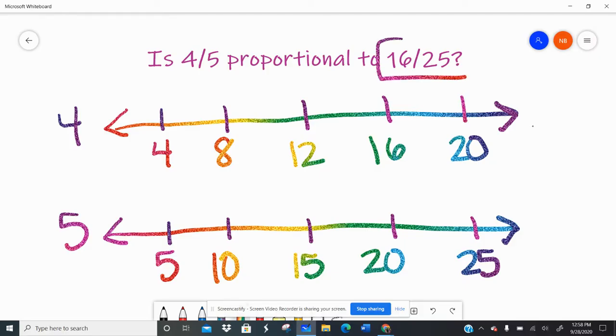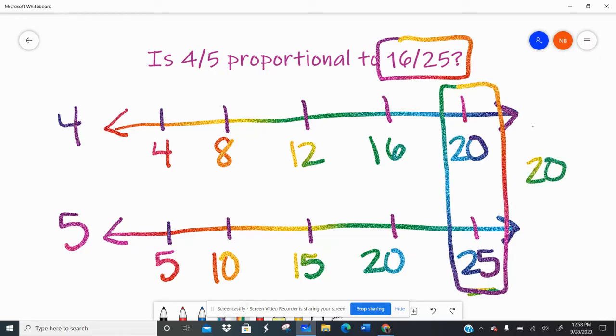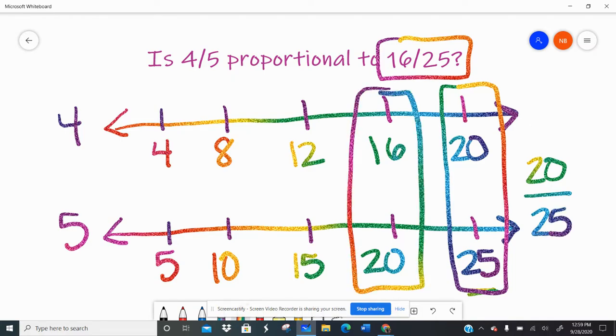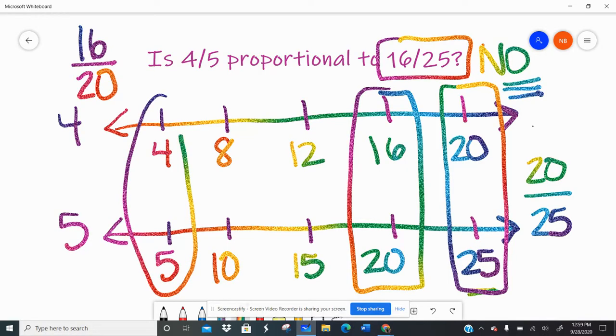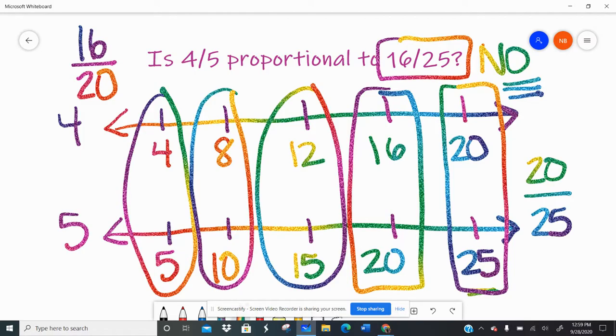So it says is 16/25? Well, if I go to 25, in order to be proportional, I would have to have 20/25. If I went to the 16, in order to be proportional, I would have to have 16/20. So the answer to this question is no, they are not proportional because the 16 and the 25 do not line up in the same grouping. Remember, that's why we line them up underneath each other. Those are the ones that belong to the one up top and bottom. So no, 4/5 is not proportional to 16/25 because they do not line up properly.